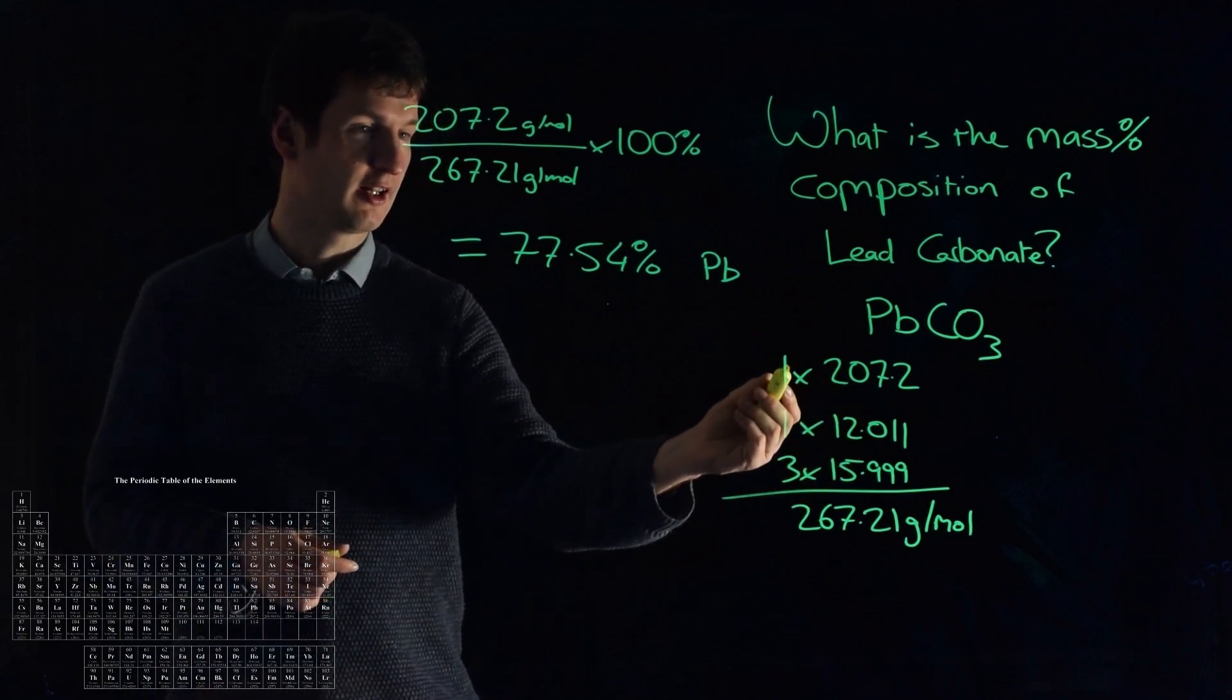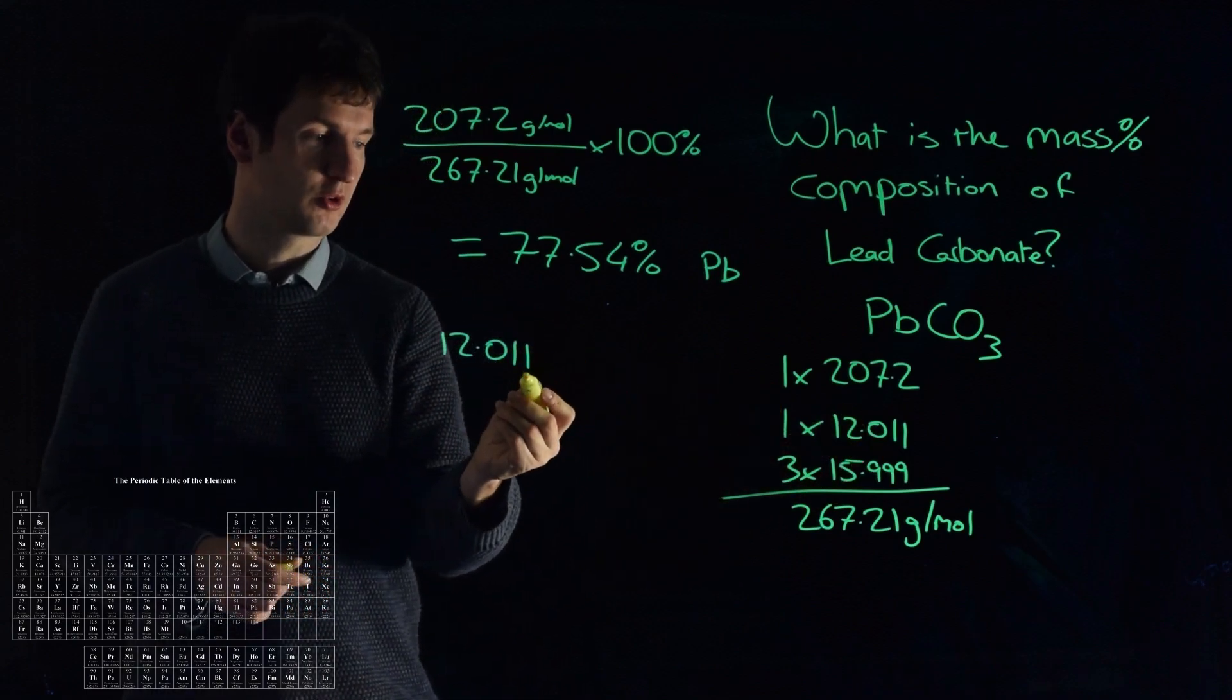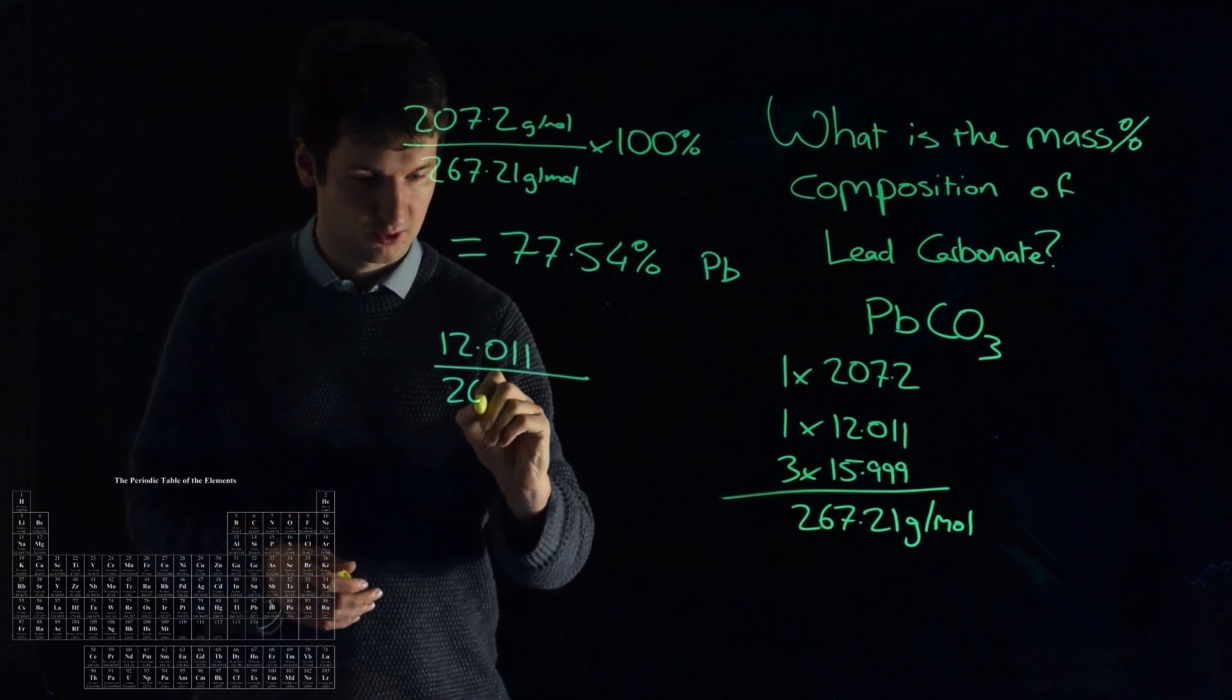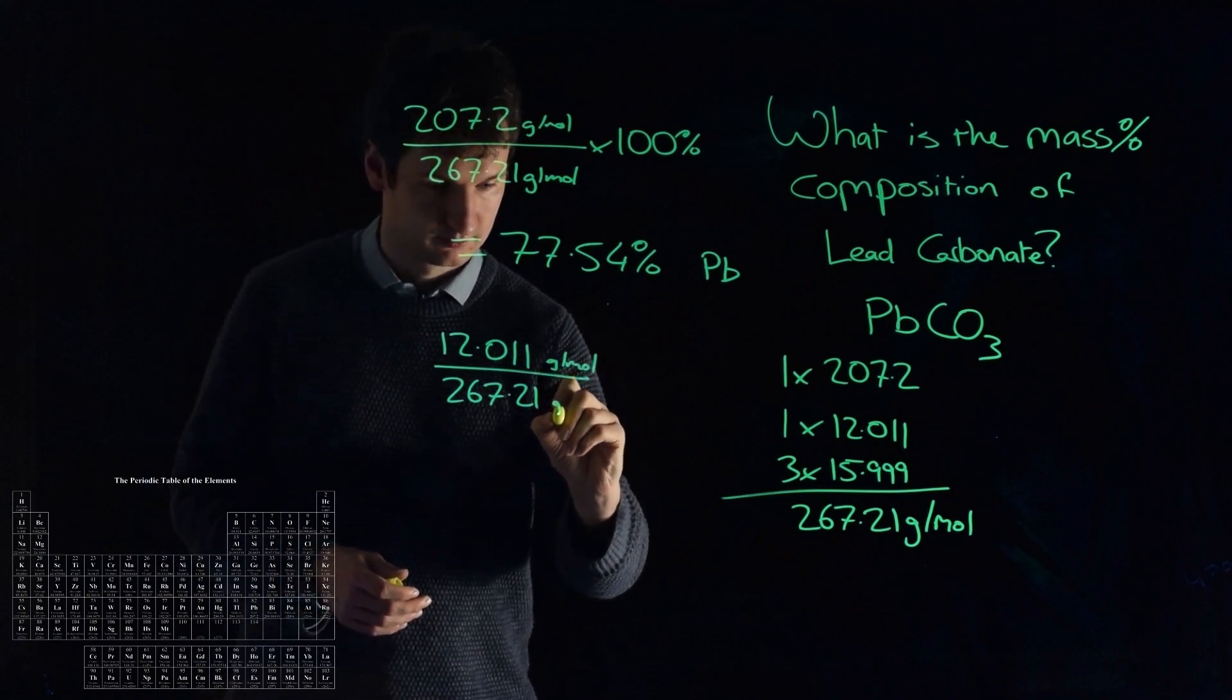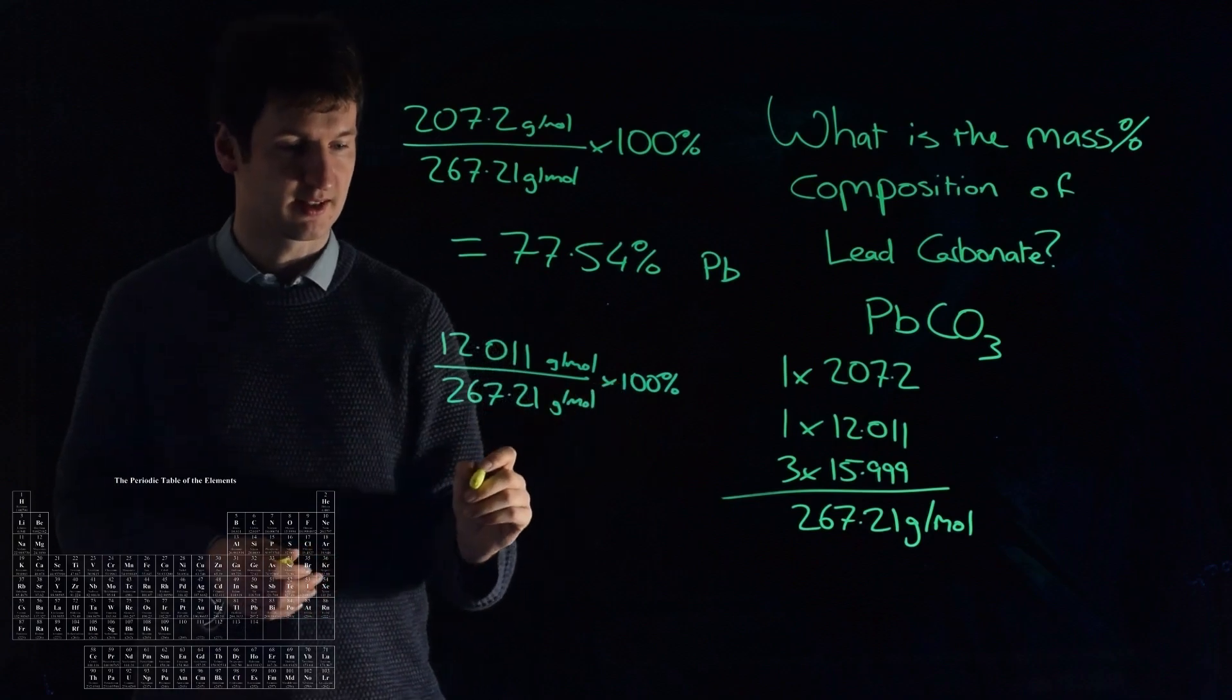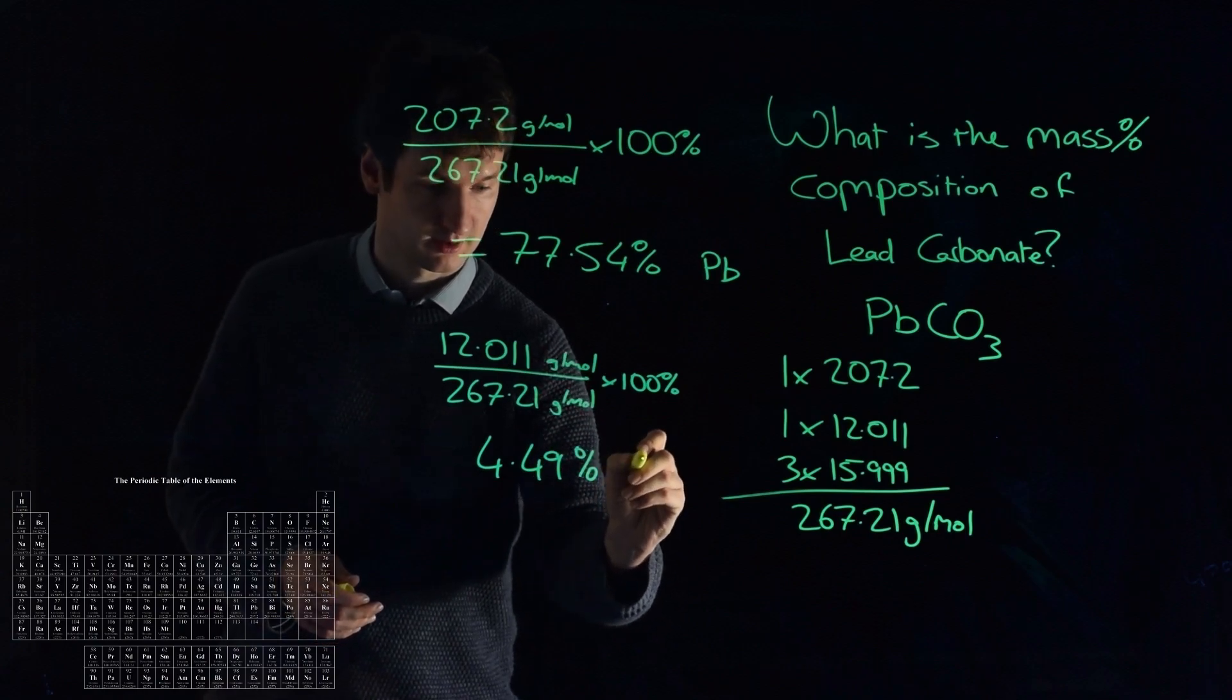What about the others then? Well, for carbon, we know that carbon is 12.011, and there's only one carbon in it. So 12.011 grams of this mole of lead carbonate are carbon. So divide it by the 267.21, they're both grams per mole, multiply it by 100%, and the units will cancel out. And what we'll be left with is 4.49% carbon.